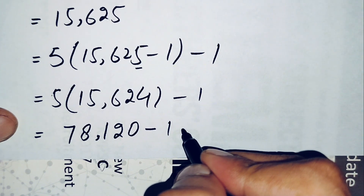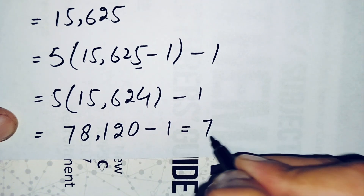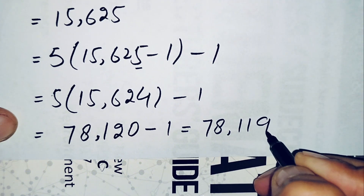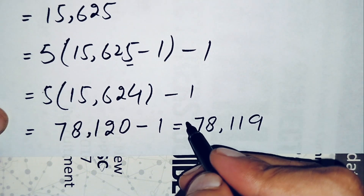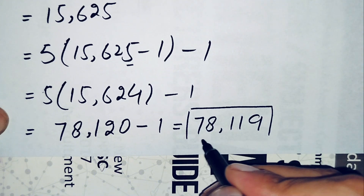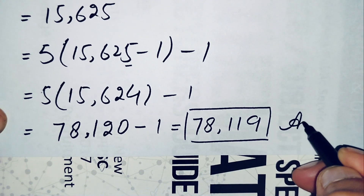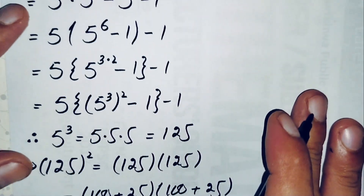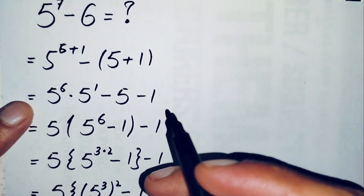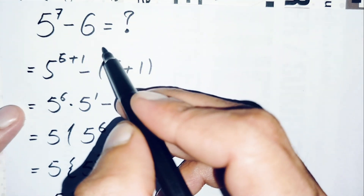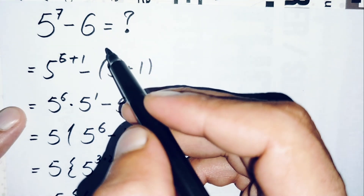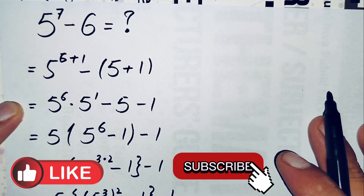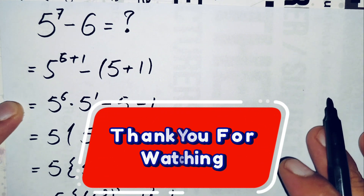Subtracting 1 from 78,120 gives us 78,119. So 78,119 is our final answer for this interesting simplification math problem. If you liked this video, don't forget to subscribe to the channel. Thanks for watching!